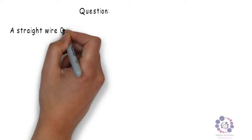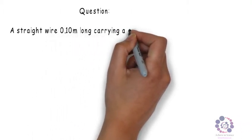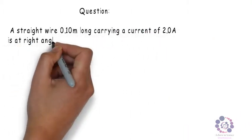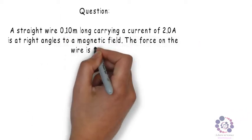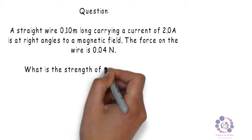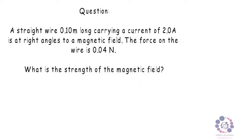A straight wire 0.10 meters long carrying a current of 2 amps is at right angles to a magnetic field. The force on the wire is 0.04 newtons. What is the strength of the magnetic field?